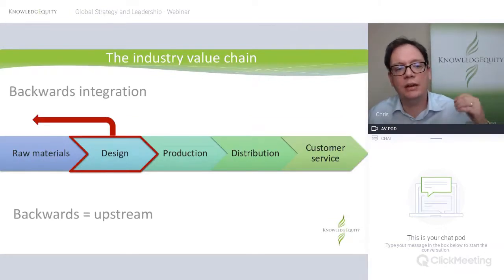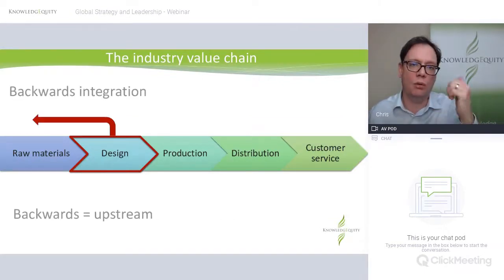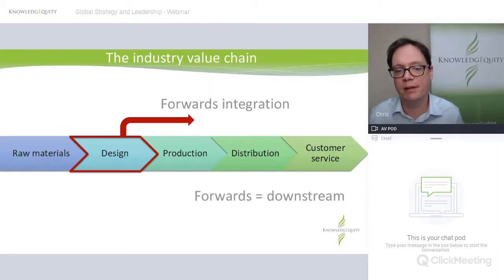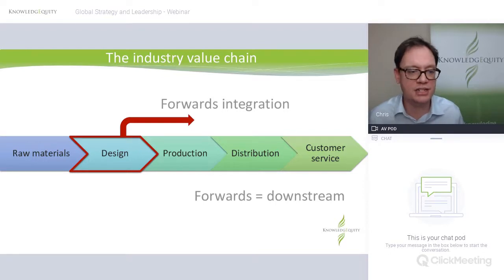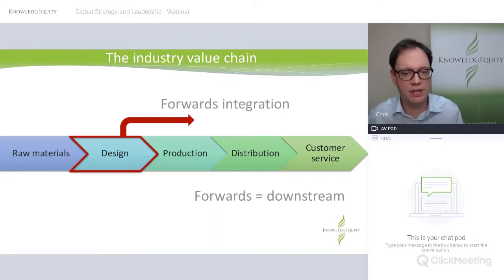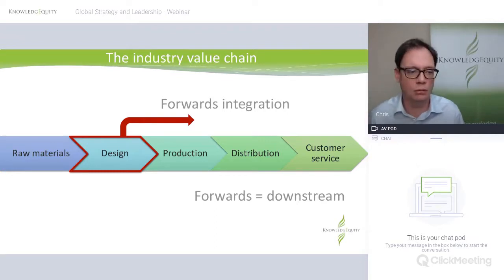Don't always assume an organisation will want to suddenly become the raw material supplier and do backwards integration. A manufacturer wanting to get raw materials is probably not in their interest at all. Similarly, does a designer who handles marketing and sells a great product really want to spend millions setting up a manufacturing facility? Many people have no interest in doing that. For backwards integration you're going upstream, and for forwards integration you're going downstream.